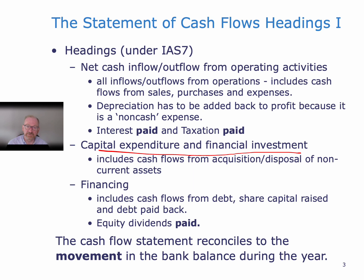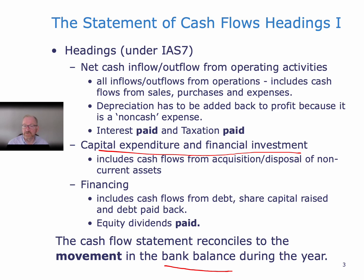So we can reverse engineer that figure if we need to. The cash flow statement reconciles to the movement in the bank balance. When we have prepared these three sections and looked at each item within them, it should reconcile to the change in the cash balance. So if the cash went from $100,000 to $300,000, the change in cash was a positive $200,000 — that is what the cash flow statement should reconcile to.